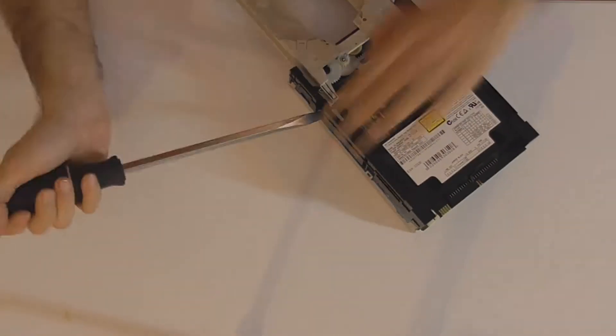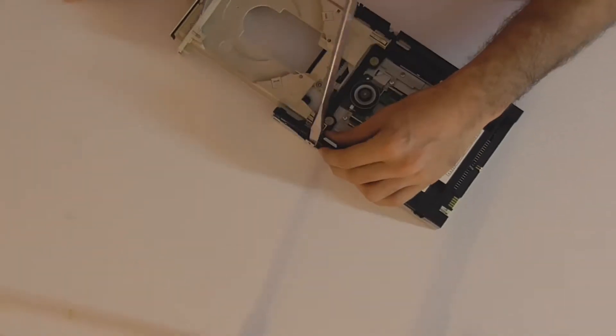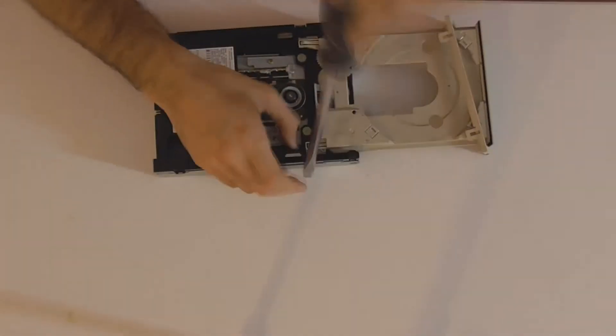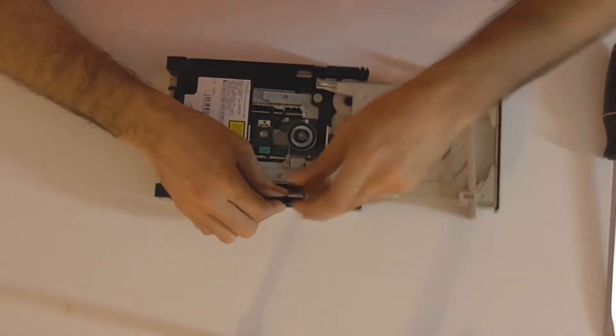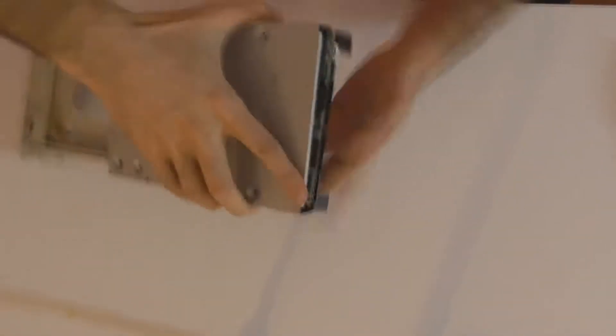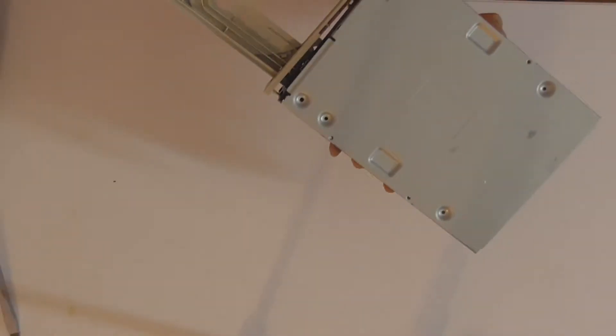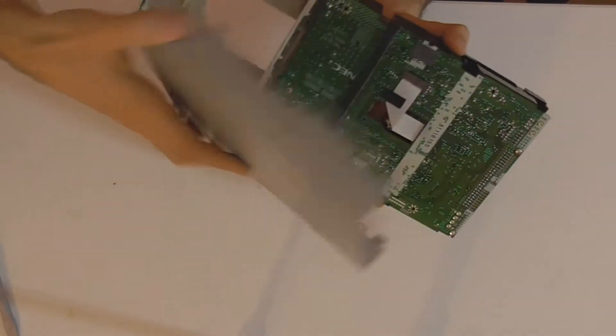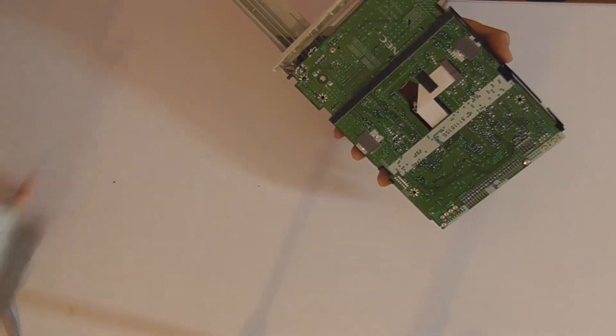Now, to take the bottom cover off, I'm going to pry with a flat head screwdriver around the perimeter, especially focusing on any tabs that may be holding it in place. And there it is. The bottom cover is off.